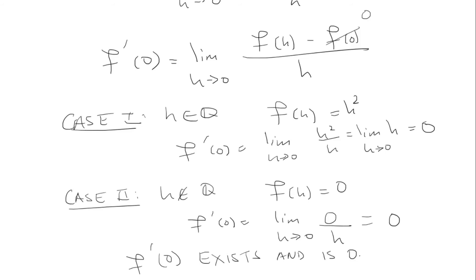Now, let's look at another example where it doesn't exist. Is x if x is rational and 0 if x is irrational?